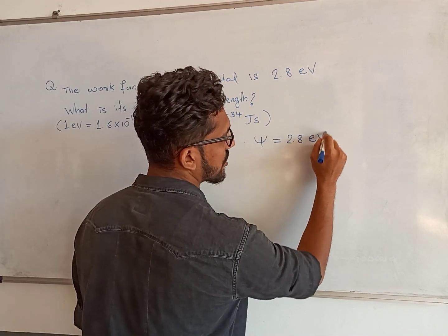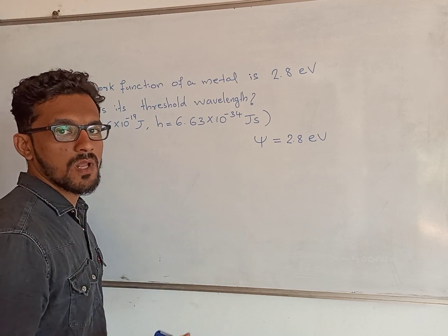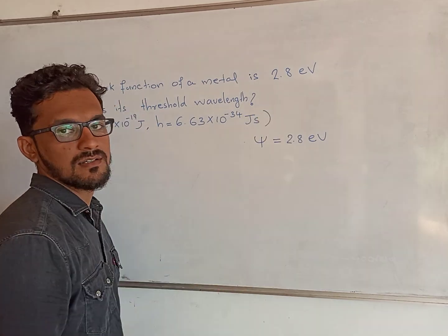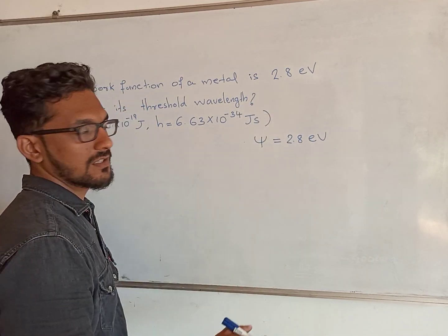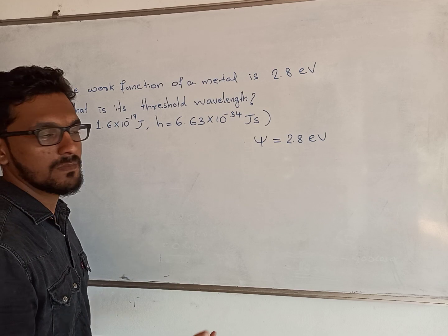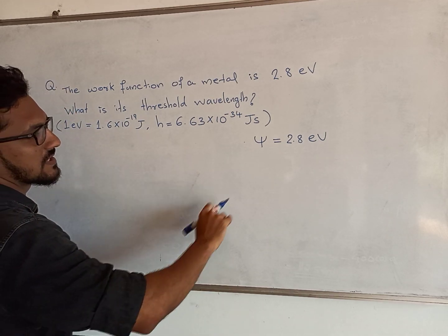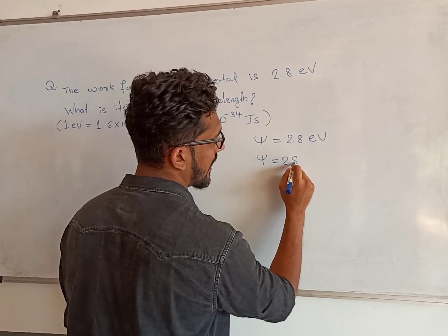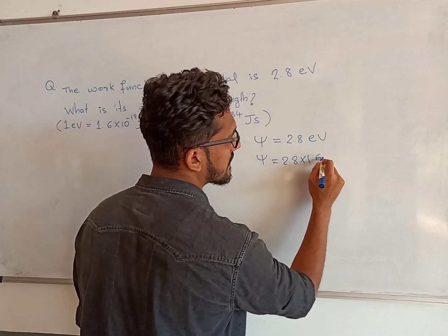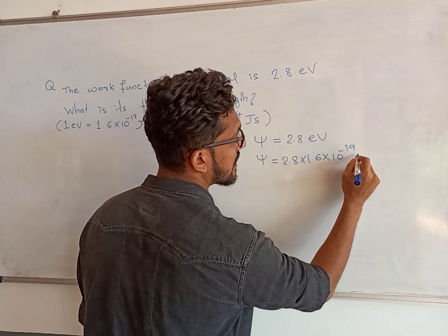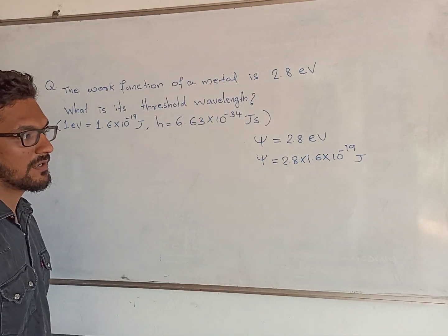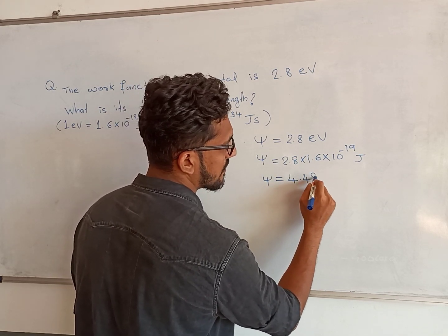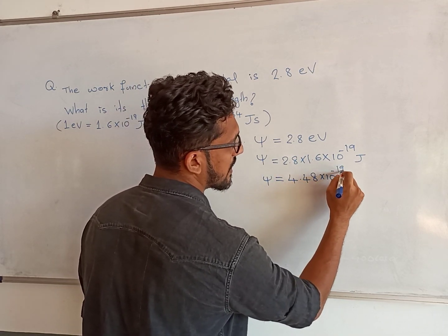The work function is 2.8 electron volt. The problem is that 2.8 electron volt is an energy unit, so we convert it to joules. The answer is 4.48 into 10 raised to minus 19 joules.